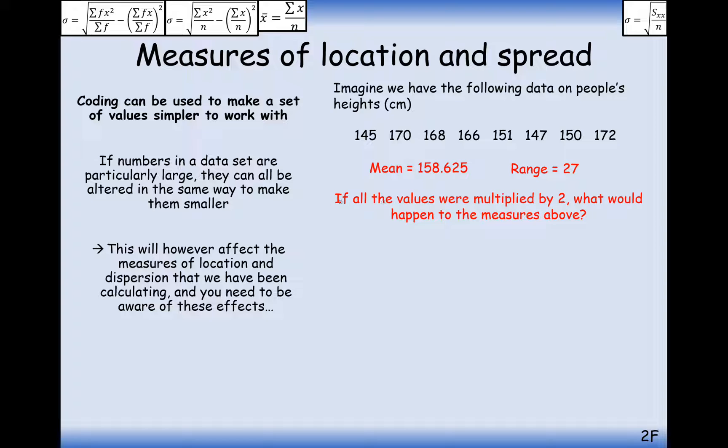Let's have a think now. If all these values were multiplied by 2, what would happen to the measures above? Well in this case here the mean and the range would both double. If you're doubling the smallest value and doubling the largest value then their difference is going to get twice as far away, and of course the mean is going to get doubled as well.